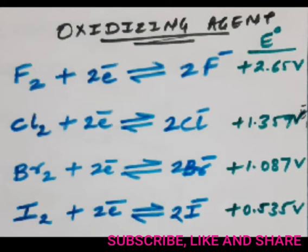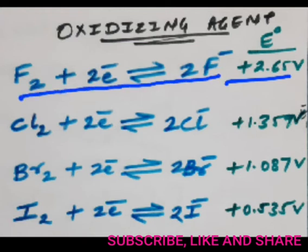So on that basis, what you can say is F2 has the most positive reduction potential value compared to others, so it can be easily reduced. That means it can undergo easy reduction, and so F2 will be a stronger oxidizing agent.